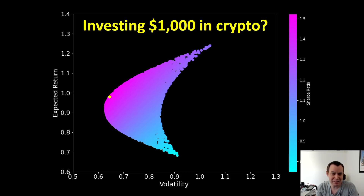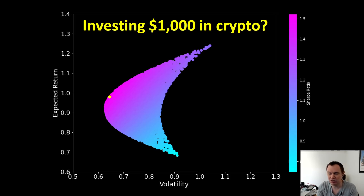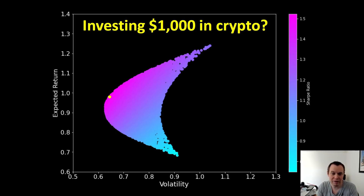Let's imagine you're new to the market and you've never invested before and you have a thousand dollars. How do you get into crypto — do you start with random altcoins, or the altcoin that was shown on Reddit last week that probably had a lot of bots upvoting the post? What you could do is run this analysis to identify the portfolio composition that maximizes your risk-adjusted returns.